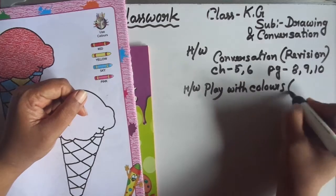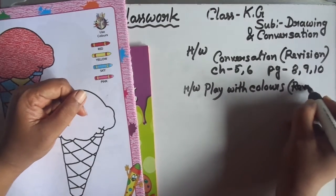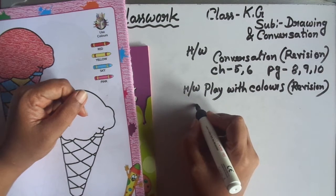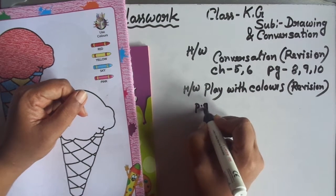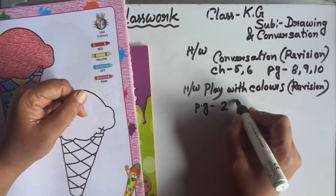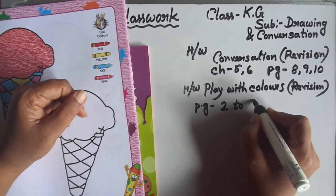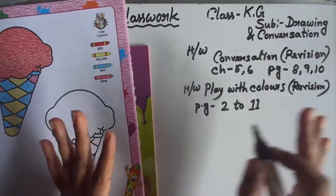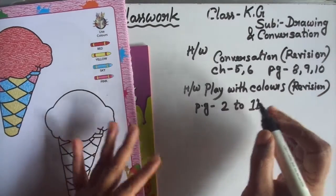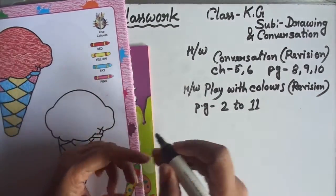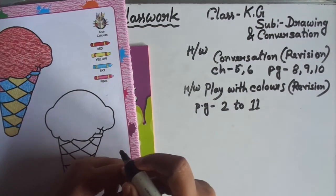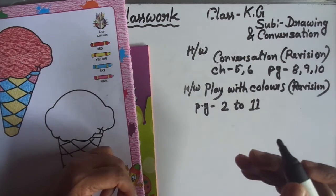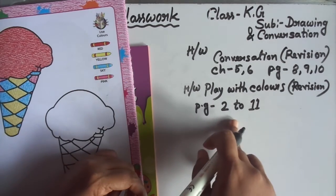My color drawings - homework. Revision. Complete pages 4 to 15. Those that are not complete, children you complete all pages. It is revision, so you complete it. Page 2 to page 11 - your homework.